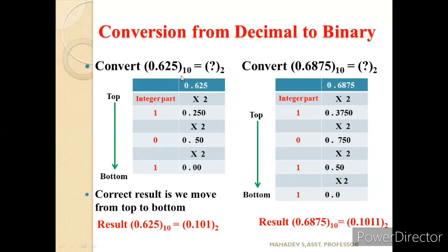Another example: 0.6875 base 10 equals how much in binary? Multiplying 0.6875 by 2 gives 1.375, integer part 1. Multiplying 0.375 by 2 gives 0.750, integer part 0. Multiplying 0.750 by 2 gives 1.50, integer part 1. Multiplying 0.5 by 2 gives 1.0, integer part 1; stop here. Moving from top to bottom, the result is 0.1011 base 2.